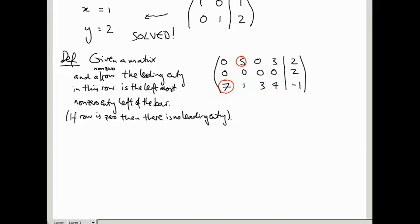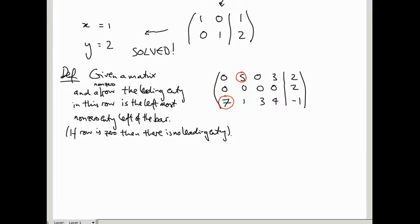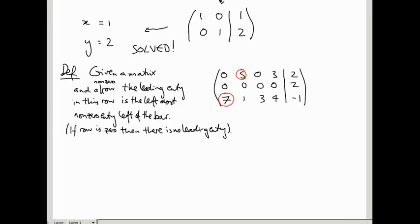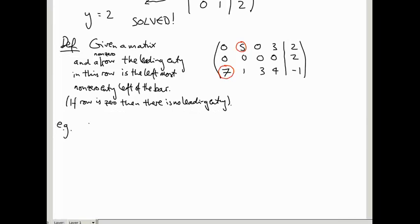We want the matrix to the left of the bar to look like the identity matrix as far as possible. For the 3×3 identity matrix, the leading entries are 1, 1, 1, positioned top-left and moving diagonally down to the bottom right. An echelon form matrix is one where the leading entries move to the right.